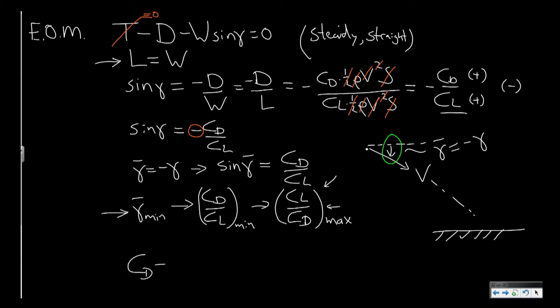which is valid for any aircraft, which states that CD is CD0 plus k1 times CL plus k2 times CL squared. So, in other words,